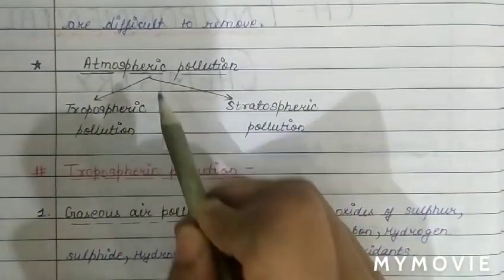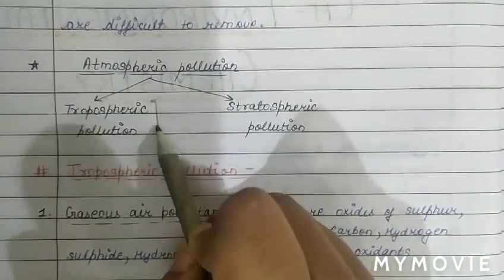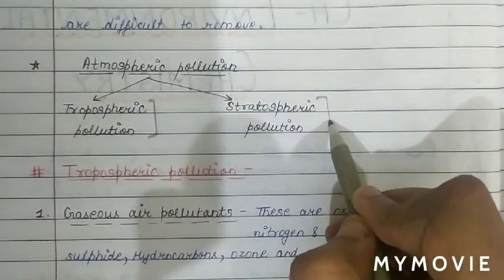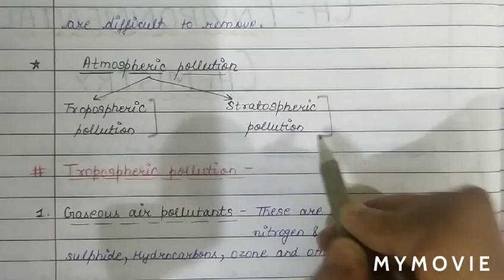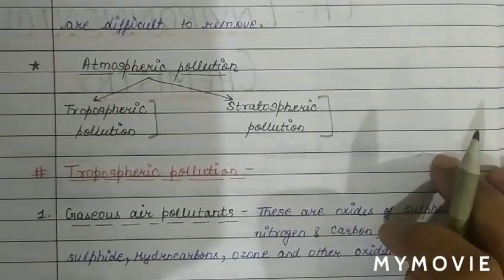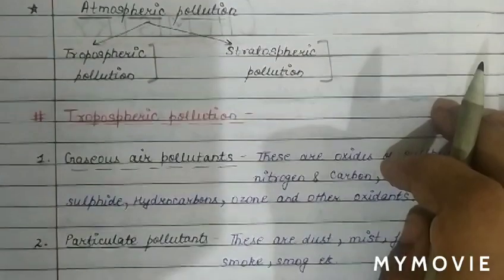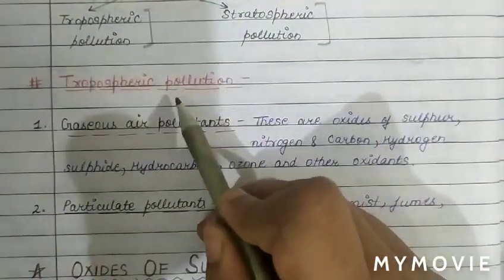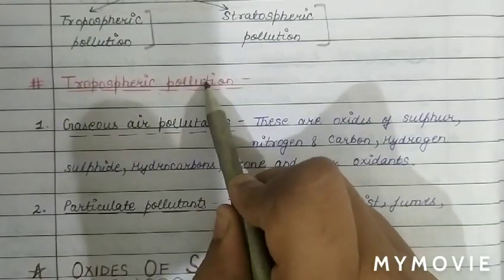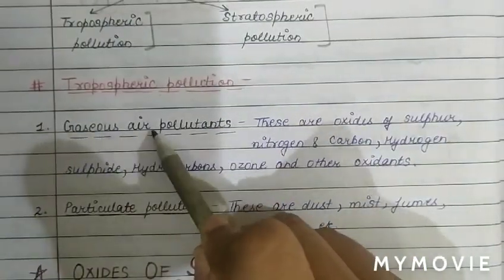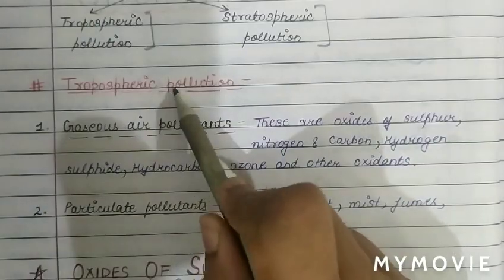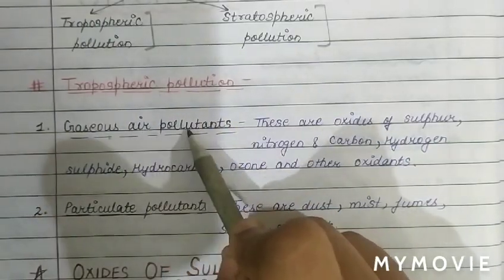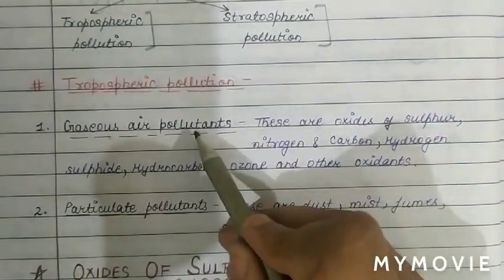Atmospheric pollution is divided into two parts: tropospheric pollution and stratospheric pollution. In tropospheric pollution, we first discuss gaseous air pollutants.